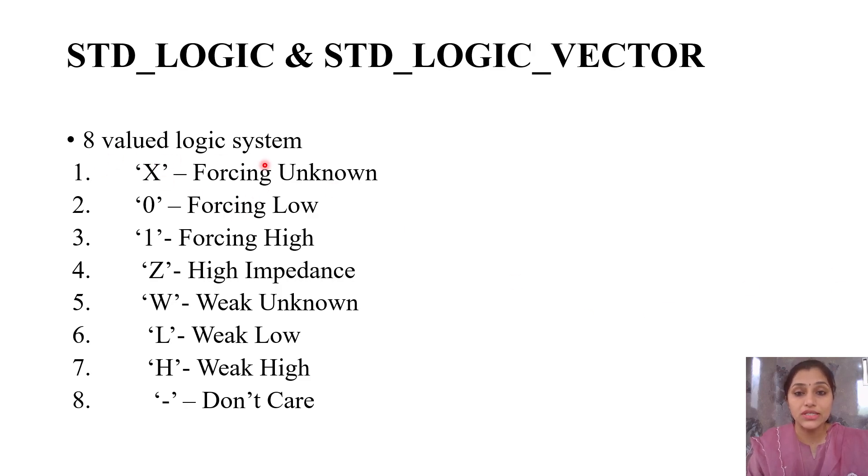Standard logic is an 8-valued logic system. The 8 values are: X (forcing unknown), 0 (forcing low or strong 0), 1 (forcing high or strong 1), Z (high impedance), W (weak unknown), L (weak low), H (weak high), and dash (don't care). The difference between forcing low and weak low is that 0 means exactly 0 volts, while weak low means voltage like 0.5V, 0.8V, or 1.2V—not exactly 0 but within noise margin.